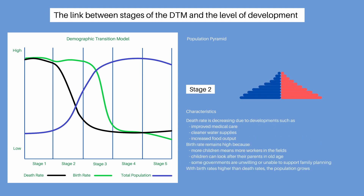In stage 2, death rates fall significantly, mainly due to improved medical care, but also as a result of development such as cleaner water supplies and increased food output. Birth rates remain high because more children means more workers in the fields, and children can look after their parents in old age. Some governments are unwilling or unable to support family planning. With birth rates higher than death rates, the population total grows.